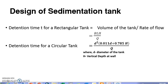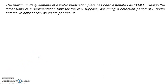When it comes to the circular tank, the retention time can be calculated as D² × (0.011D + 0.785H) whole divided by the rate of flow (discharge), where D is the diameter of the tank and H is the vertical depth at the wall.